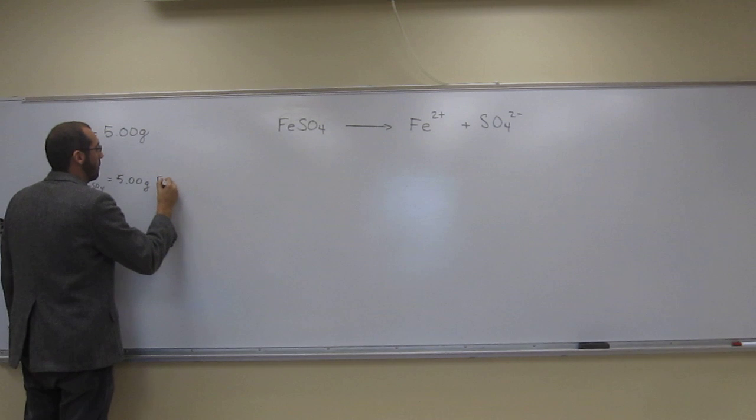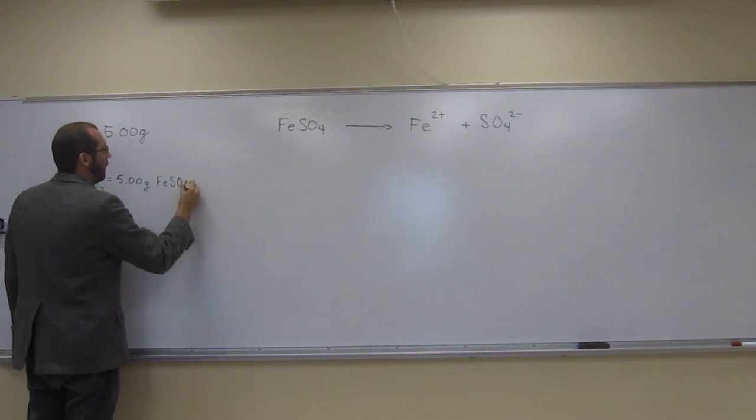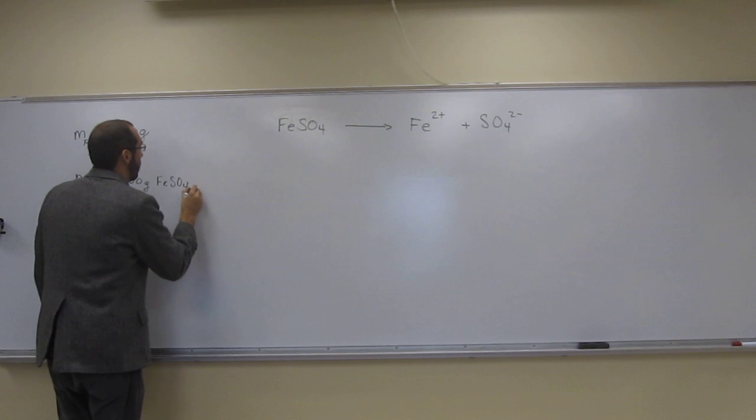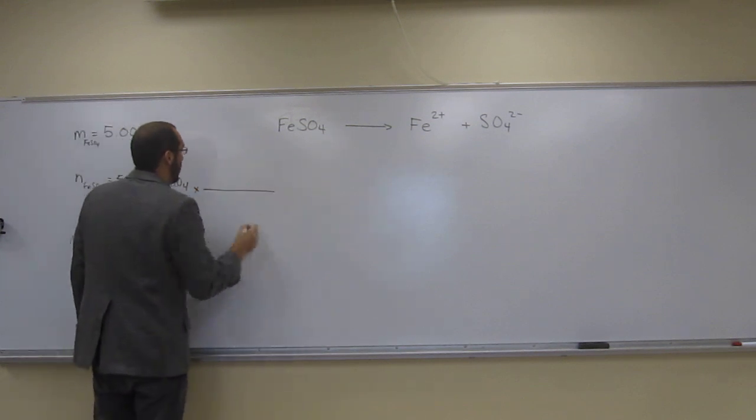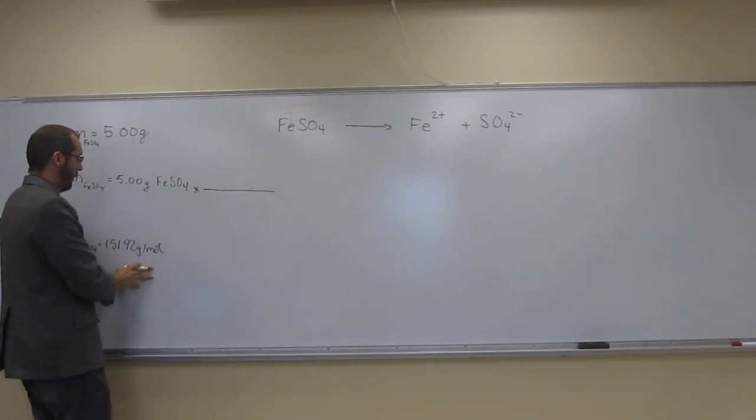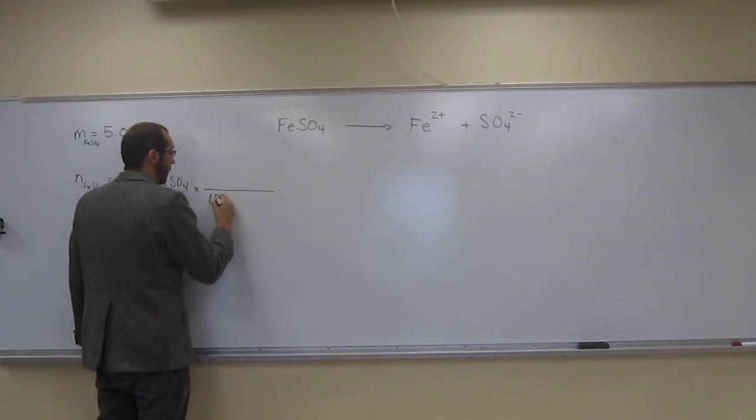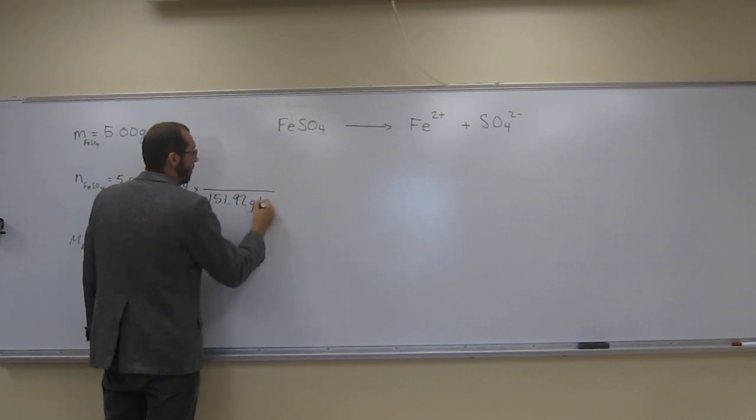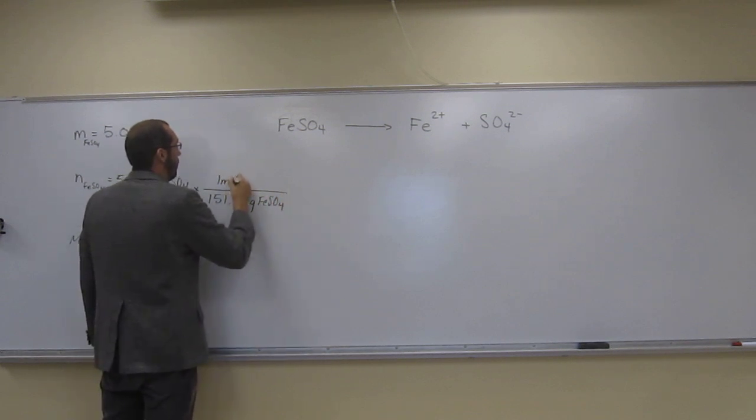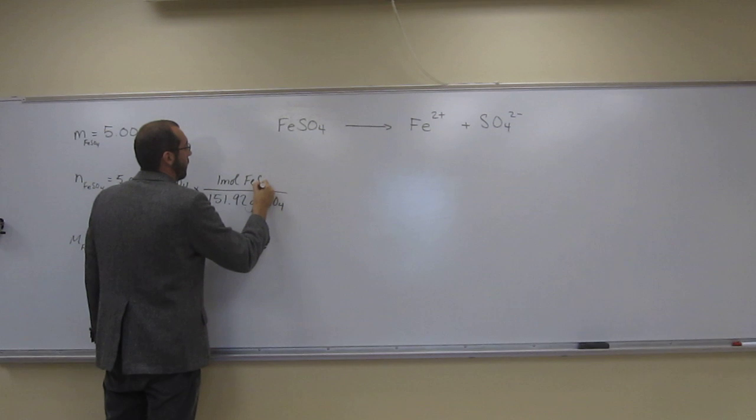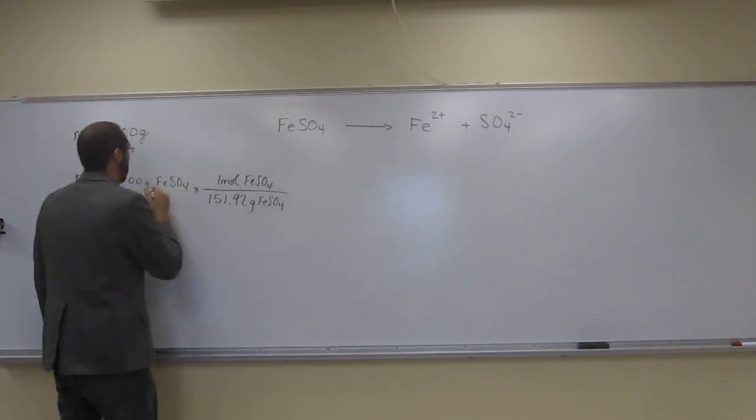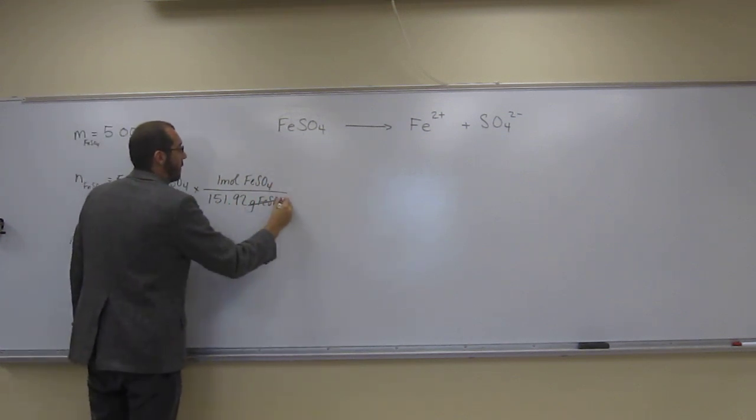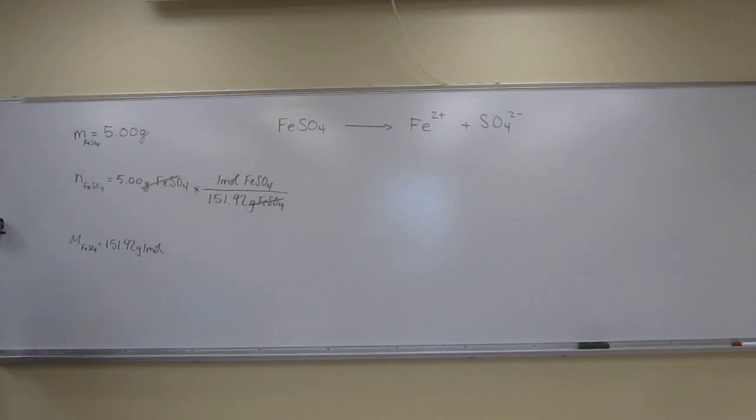So if we've got that many grams of iron 2 sulfate, we'll multiply that by the inverse of the molar mass, because we want to cancel out grams and get moles. So 151.92 grams of iron 2 sulfate per one mole of iron 2 sulfate, so that gives us the number of moles there.